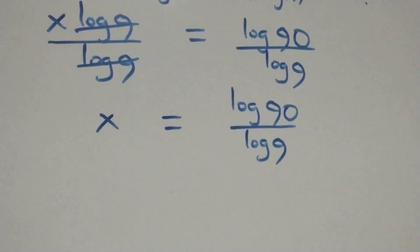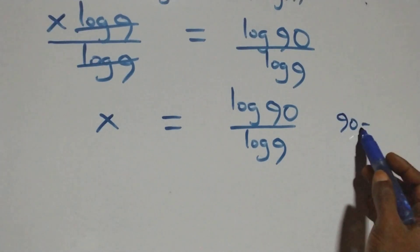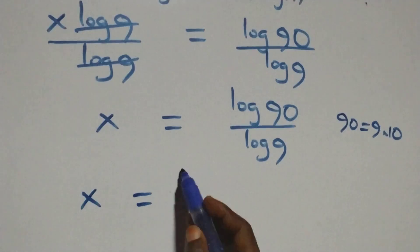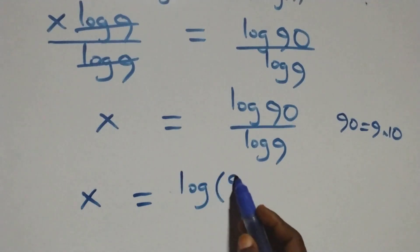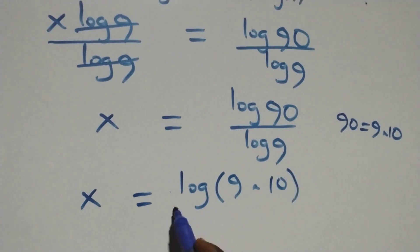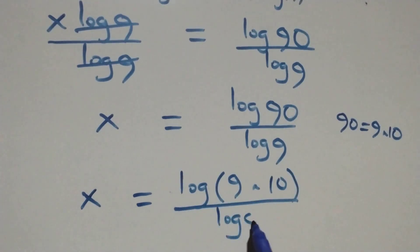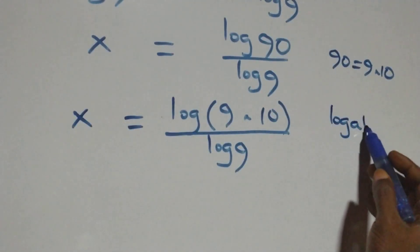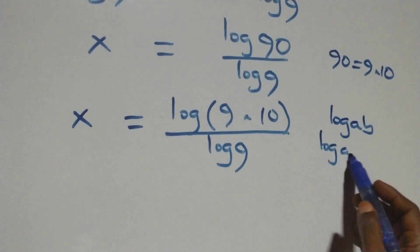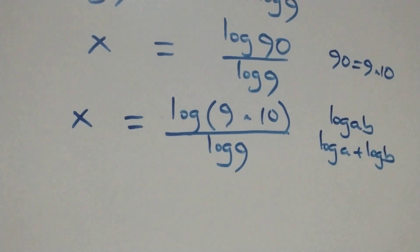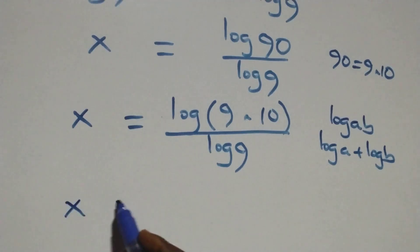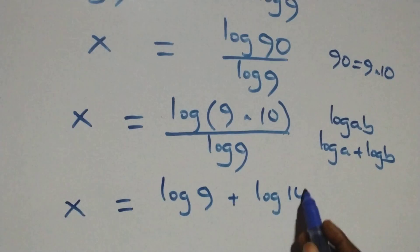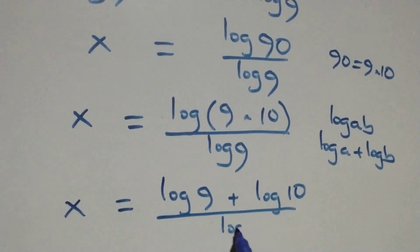Then here we can rewrite 90 as 9 times 10, which implies x equals to log(9 times 10) over log 9. This follows the law of logarithm: log(a times b) is the same as log a plus log b. So this becomes x equals to (log 9 plus log 10) over log 9.